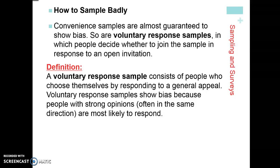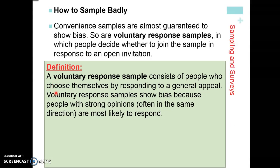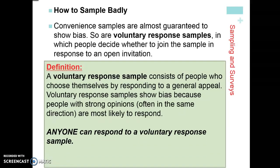Voluntary response samples are another example of how to sample poorly. A voluntary response sample consists of people who choose themselves by responding to a general appeal. Voluntary response samples often show bias because people with strong opinions, often in the same direction, are most likely to respond. For example, a survey on the back of a truck that says 'please call if I am driving poorly' is a voluntary response sample.